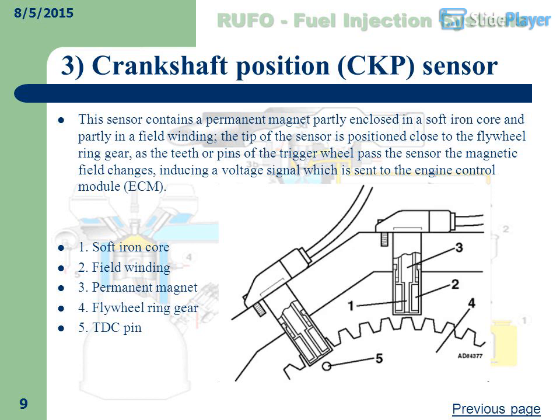Crankshaft Position (CKP) Sensor: This sensor contains a permanent magnet partly enclosed in a soft iron core and partly in a field winding. The tip of the sensor is positioned close to the flywheel ring gear. As the teeth or pins of the trigger wheel pass the sensor, the magnetic field changes, inducing a voltage signal which is sent to the Engine Control Module (ECM).